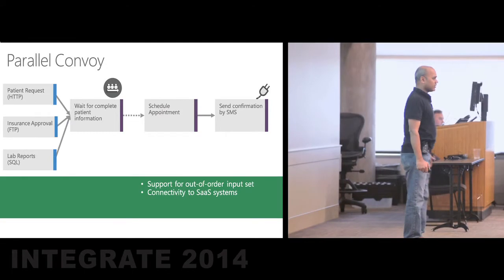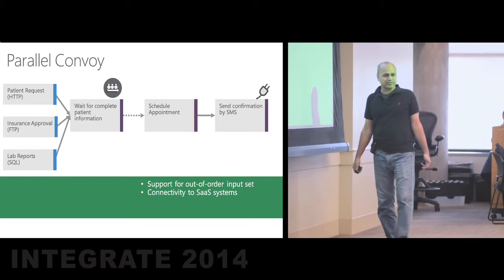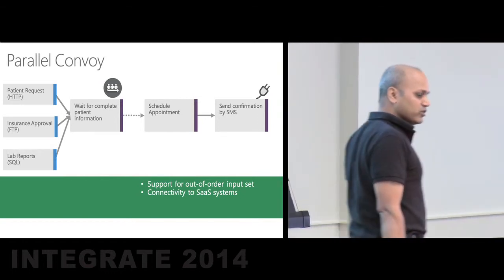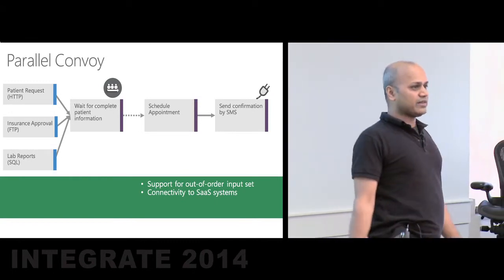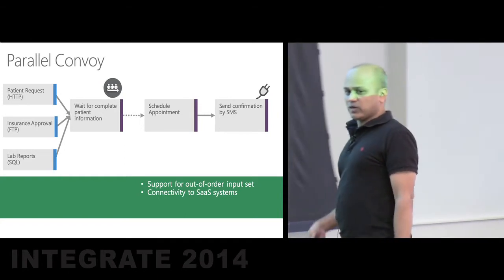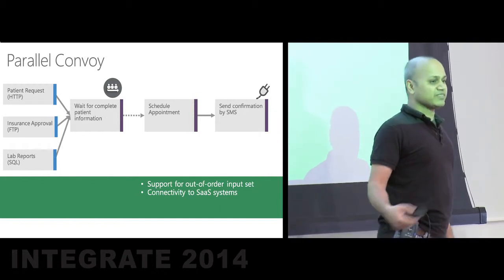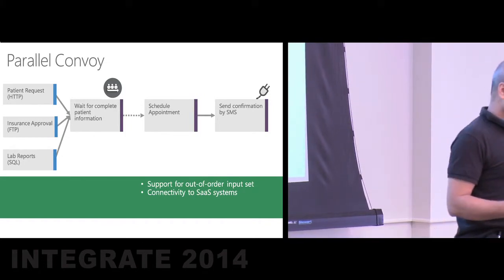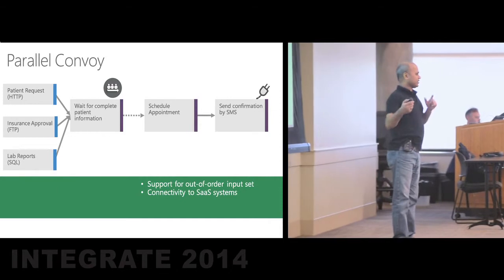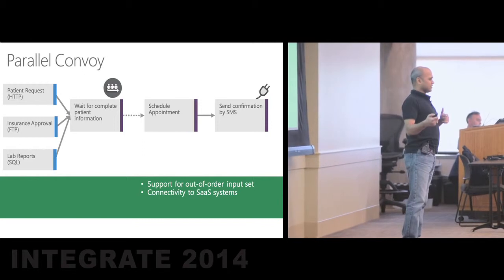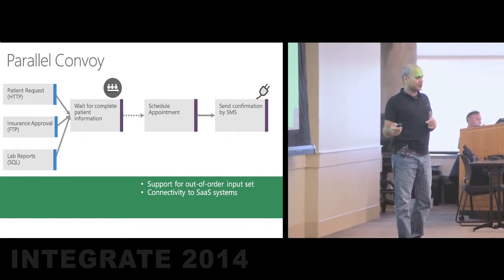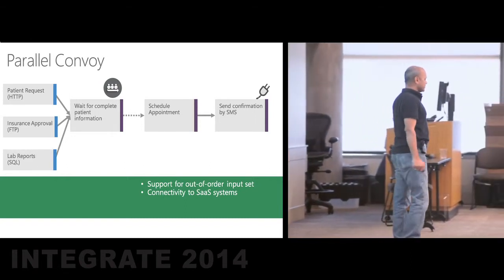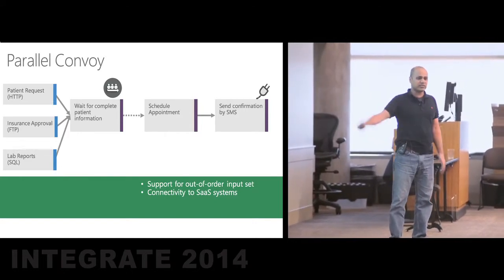The next pattern is a parallel convoy. A typical example: you call a doctor's office to schedule an appointment. Before you get an appointment, somebody needs to do an insurance approval and ensure lab reports are already in. The insurance company won't send approvals in the same order you asked for — the inputs arrive randomly. We need a mechanism to wait for the right set of input reports before scheduling the appointment and sending a confirmation. This requires support for out-of-order input sets and connectivity to a SaaS service like Twilio to send text messages.